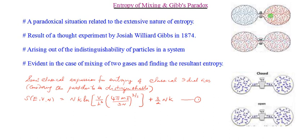This is the semi-classical expression for entropy, derived starting from S = k log omega and substituting the multiplicity omega using phase space volume. Now, the Gibbs paradox is the result of a thought experiment. Many important ideas in physics come from thought experiments — situations where you think about what would happen under certain conditions, rather than performing a real laboratory experiment.